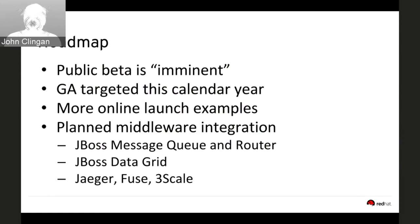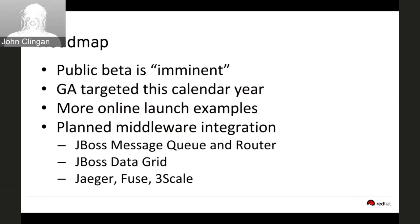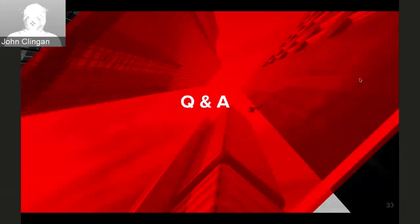Over time you'll see the list of Launch use cases grow with more and more examples, potentially more complex ones too. Planned middleware integrations include Red Hat SSO, JBoss Message Queue and Router, JBoss Data Grid, Jaeger, Fuse, 3Scale API Management, and more — the whole Red Hat Middleware portfolio — providing out-of-the-box 'it just works' examples all running on OpenShift.